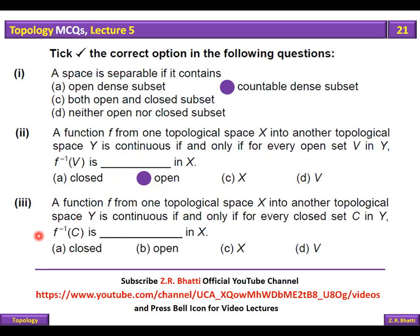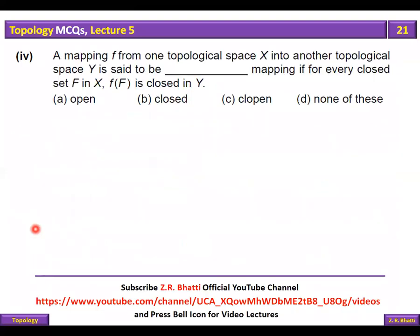Similarly, a function f from one topological space X into another topological space Y is continuous if and only if for every closed set C in Y, f inverse of C is closed in X. Yani Y ka koi bhi closed set diya jaye to uska inverse image X mein closed hona chahiye. Open set ka inverse image open — tab function continuous. Closed set ka inverse image closed — tab function continuous.